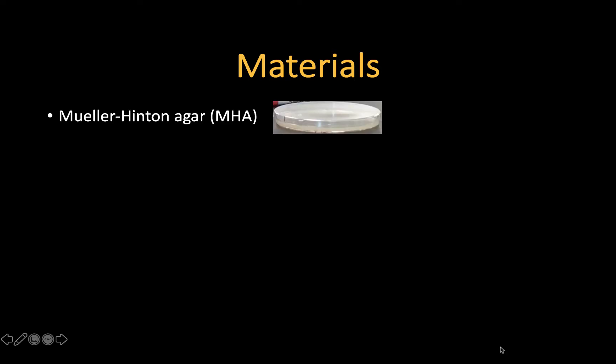Mueller-Hinton agar is a general-purpose medium. It is not selective, nor is it differential. It also contains starch, and the starch will absorb any toxins that the bacteria might produce, which could interfere with the assay. In addition, it's a soft agar, which allows free diffusion of the antibiotics into the agar.